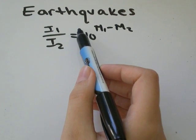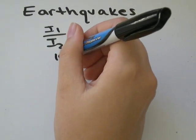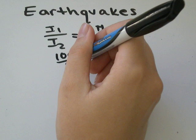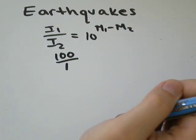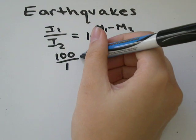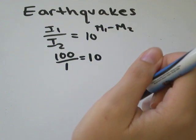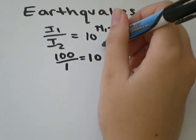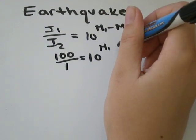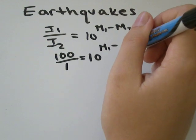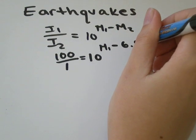so I'll just represent that with the fraction 100 over 1 equals 10 to the... We don't know how big the first earthquake is, but the one we're comparing it to is a magnitude 6.9.